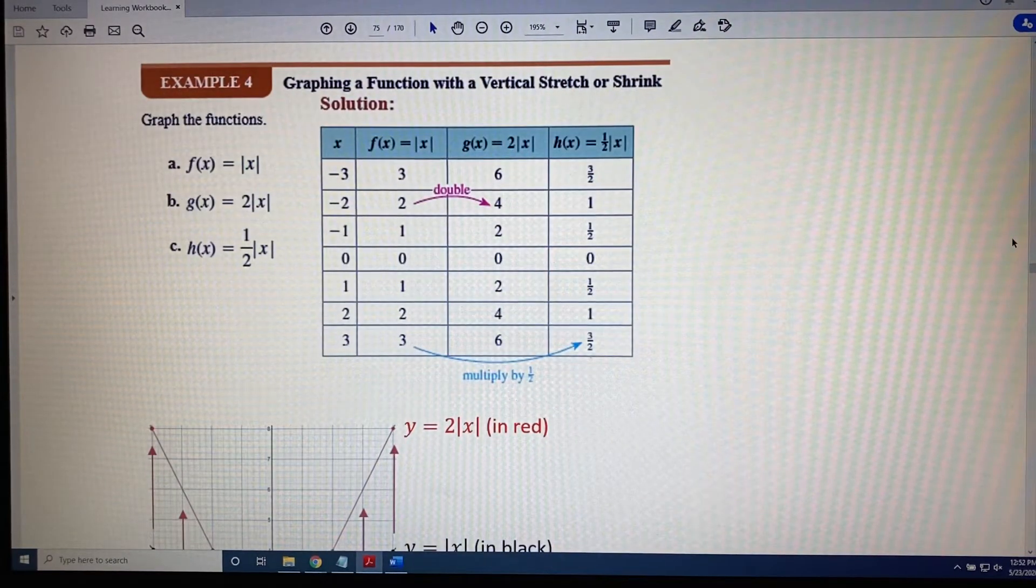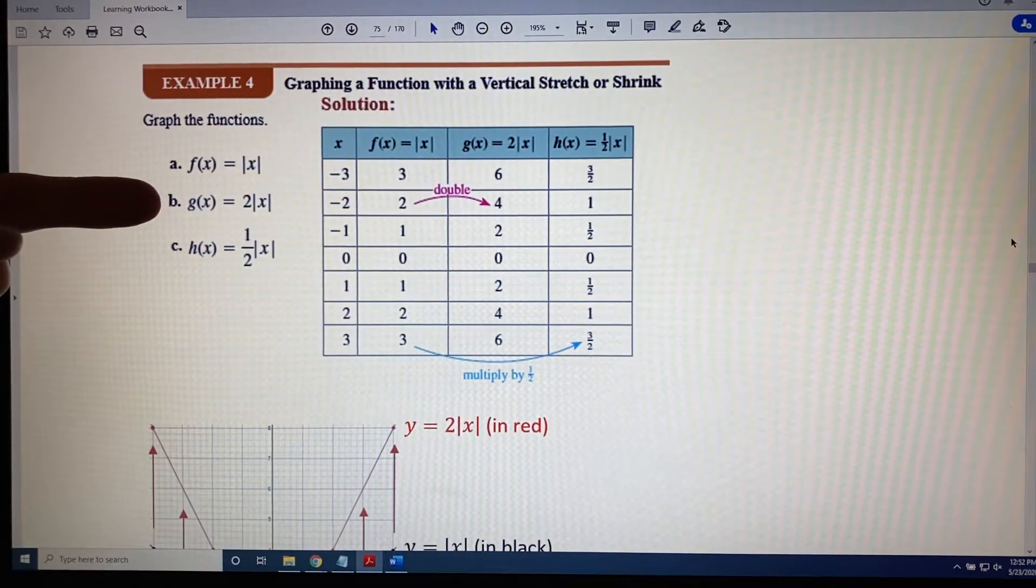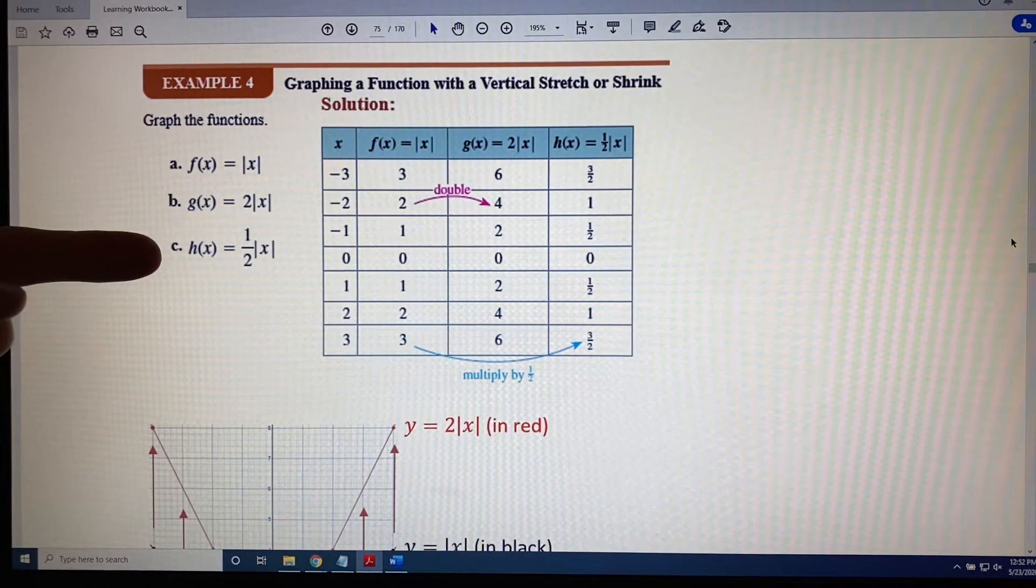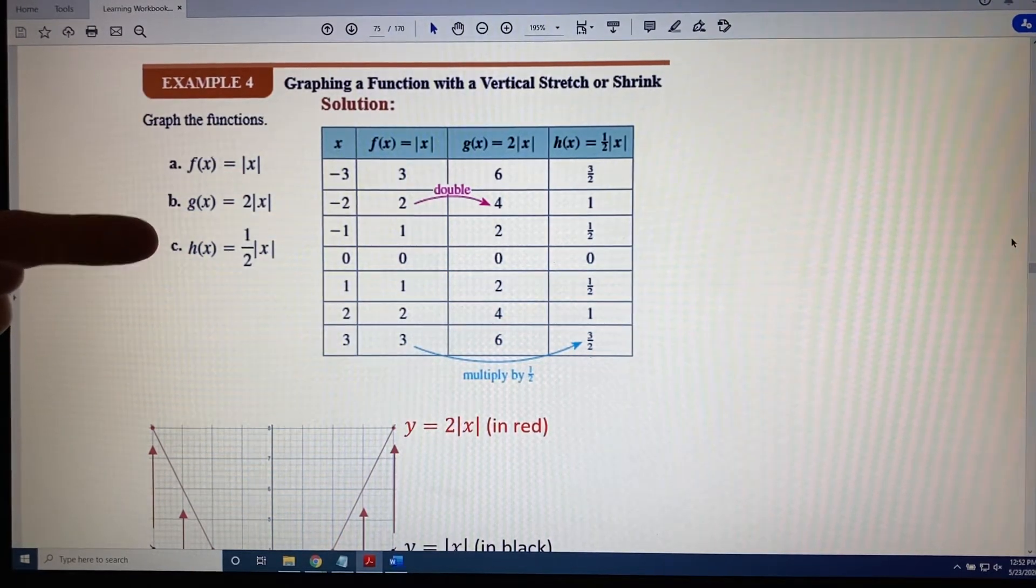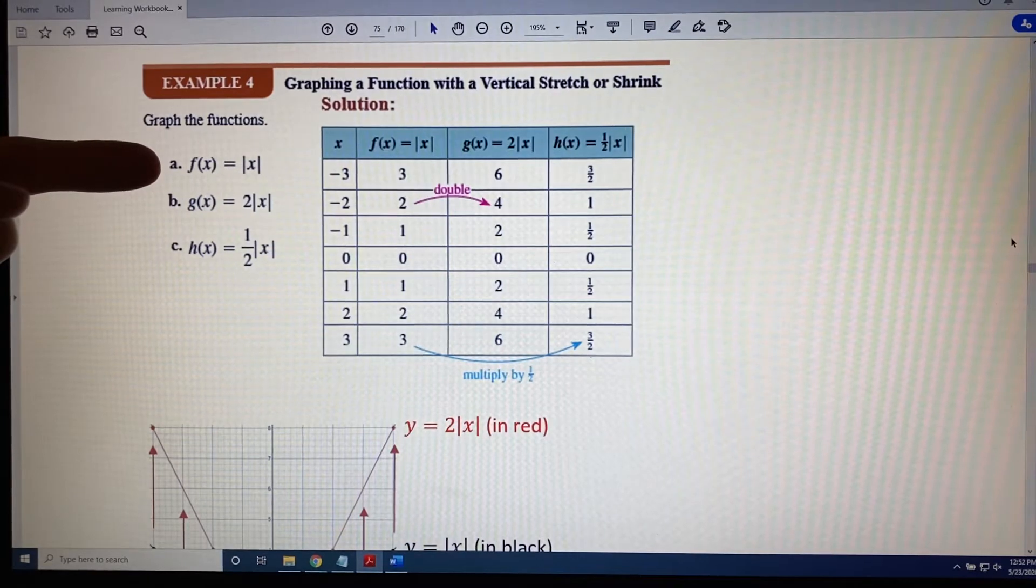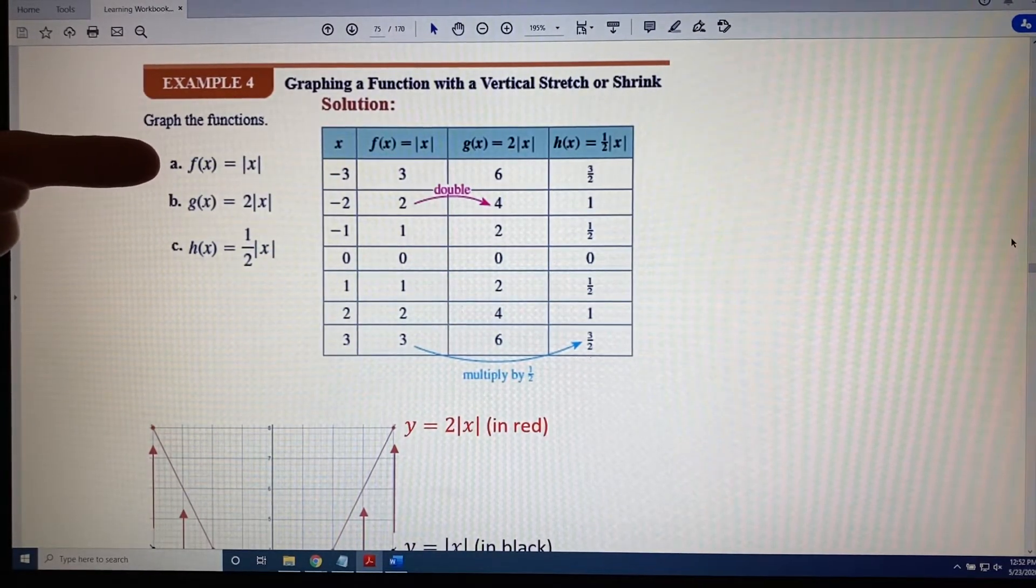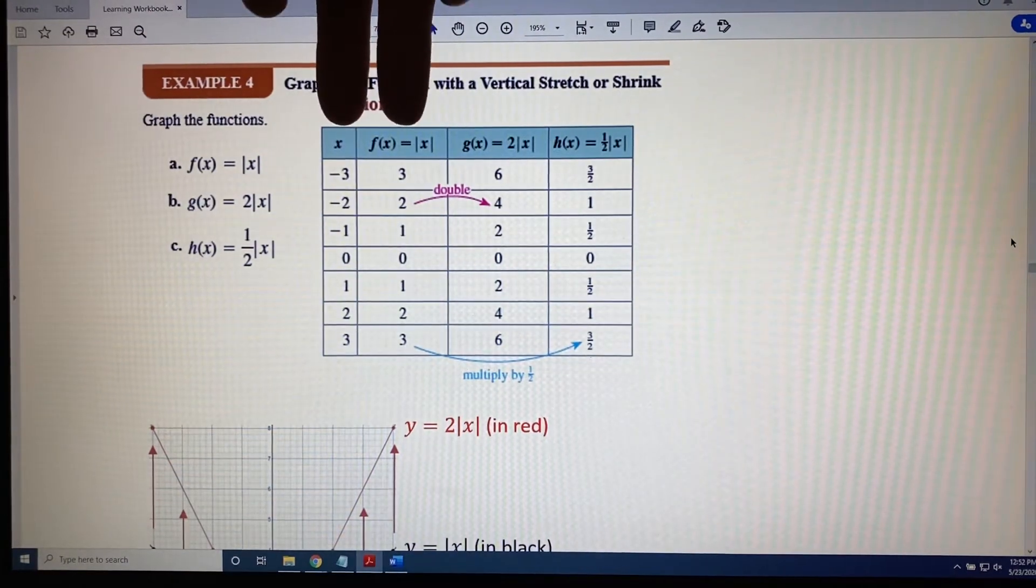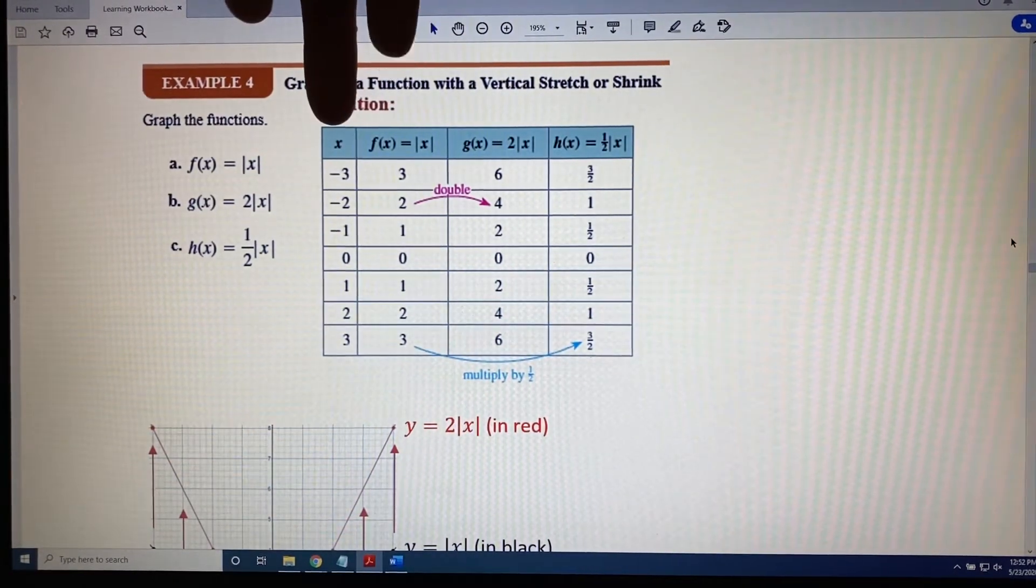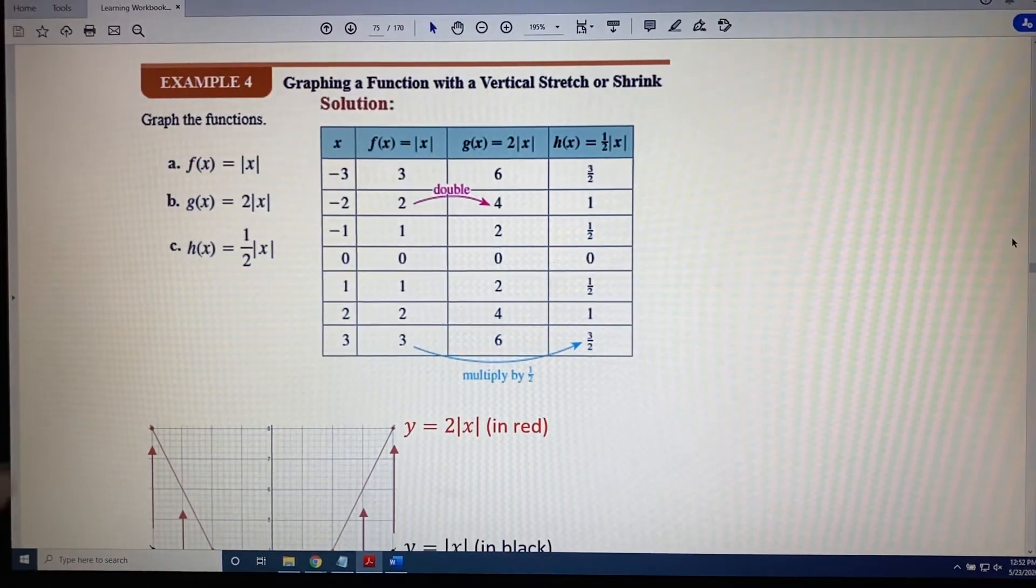Graph the functions: a. f(x) = |x|, b. g(x) = 2|x|, c. h(x) = (1/2)|x|. You might notice that this function is our absolute value function. That's one of our functions from the library of functions. That's one of our basic functions. And its coordinates are shown here. We have the x and the y for that particular equation. And these points are familiar to us.